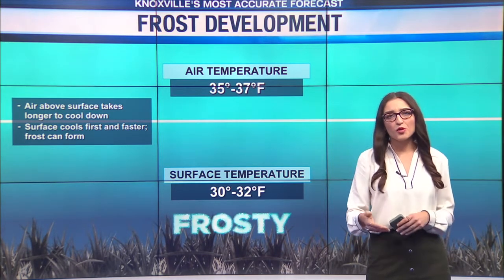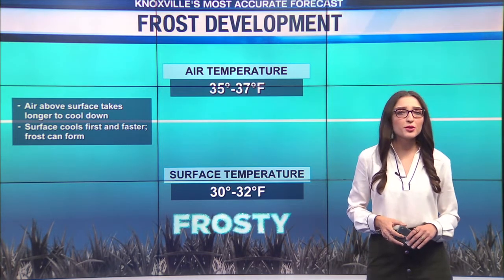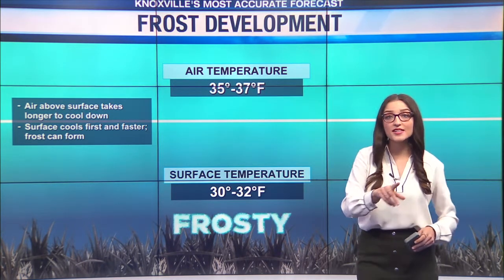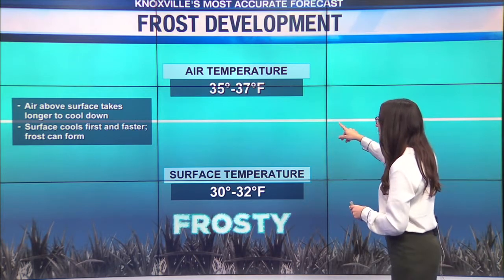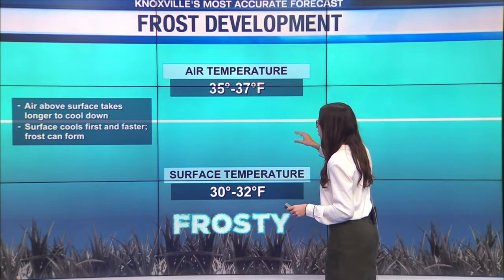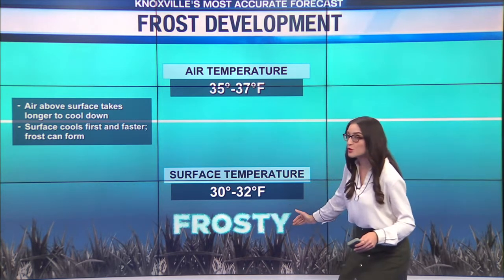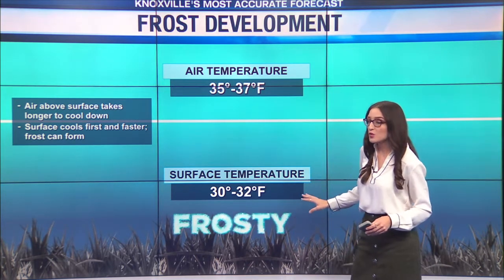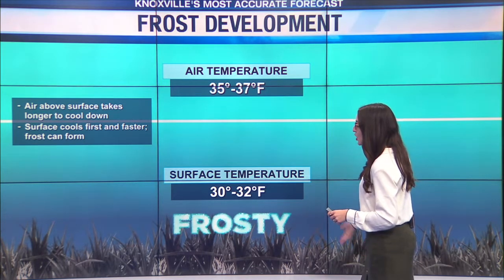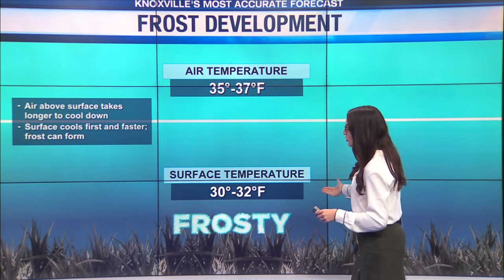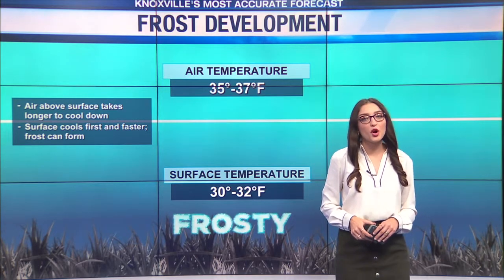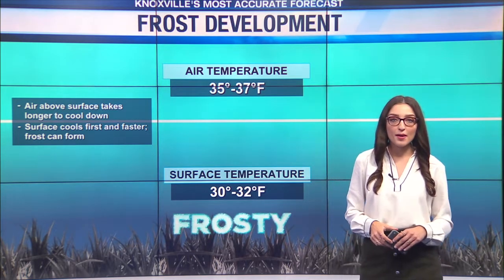Now you may be wondering — I've seen frost and our thermometer read 37 degrees. That's because it's reading the air temperature, which is usually a little bit warmer. But down at the surface is where we see cooler temperature readings. Remember, the surface cools first and faster, and when it does so, frost can develop.